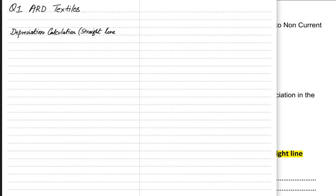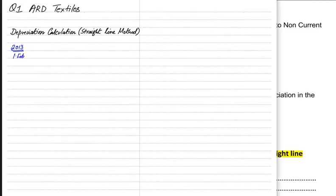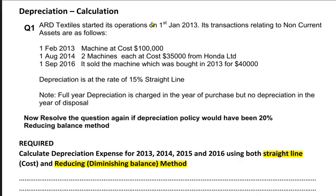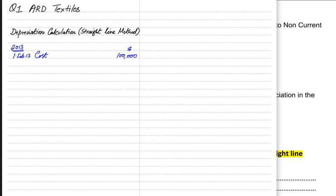For the straight line depreciation calculation, the first year is 2013. The business just started and purchased one machine for 100,000. The year runs January to December by default. Although the machine was bought on 1st February and used for only 11 months, the full year policy means we apply depreciation for 12 months. Applying 15% on 100,000 gives depreciation of 15,000 for 2013.